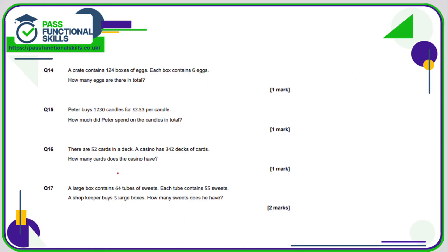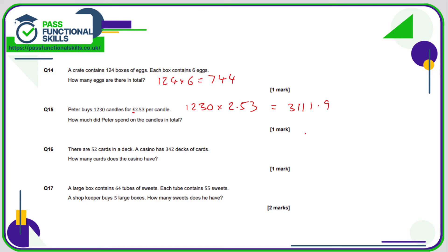We can now use a calculator for the final questions. Question 14 is simply 124 multiplied by 6 — hit equals and you get 744. Question 15: 1230 times 2.53 — you don't need to put in a pound sign. The answer is 3111.90, so in pounds and pence that is £3111 and 90p — you'll need to put a 0 on the end.